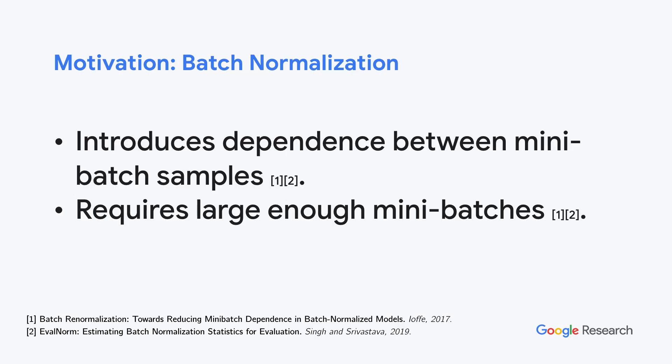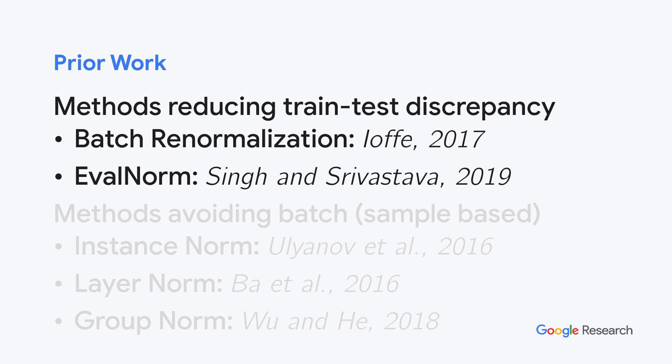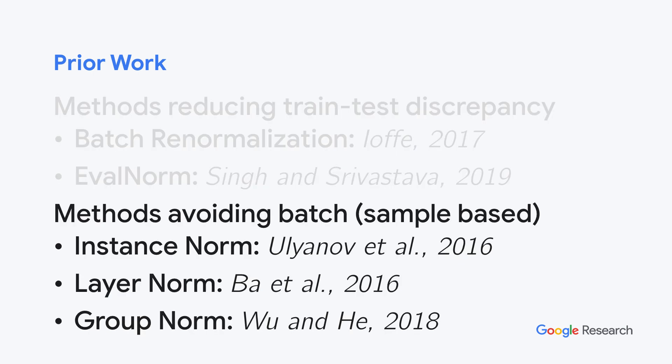Coming back, these limitations can be attributed to the computation of normalization statistics over stochastic mini-batches. Please see the references for more details. Existing methods that attempt to address these shortcomings can be divided into two main categories: methods that reduce the train-test discrepancy, and methods that avoid normalization over the batch and instead normalize each sample independently.